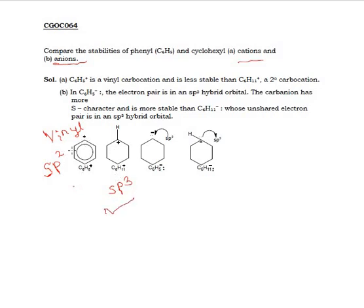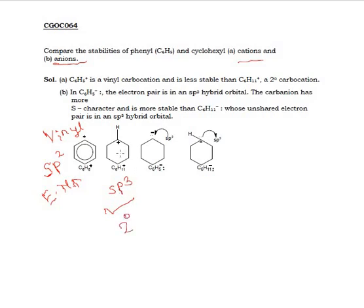Why? Because in the phenyl cation, the positive charge is on an sp2 hybridized carbon, so the electronegativity will increase. So the positive charge will be unstable. In the case of the cyclohexyl carbocation, this is a secondary carbocation and it is sp3 hybridized.